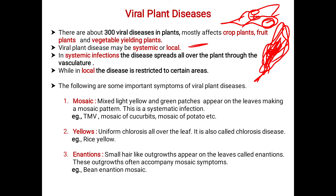The following are some important symptoms of viral plant diseases. We can analyze and differentiate whether a plant is affected by virus or bacteria based on these symptoms. The first one is mosaic, where mixed light yellow and green patches appear on the leaves making a mosaic pattern. This is a systematic infection.